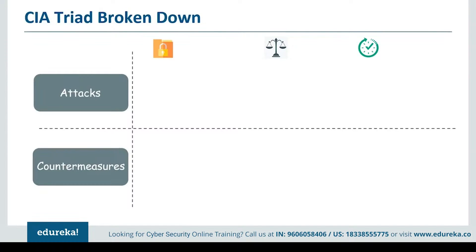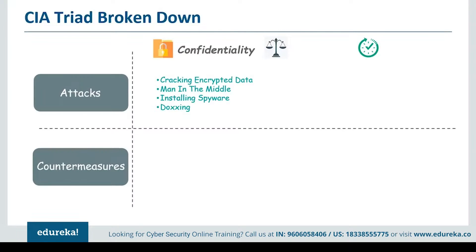Let's look at attacks on the CIA triad in the real world and how we can mitigate them. Confidentiality attacks include cracking poorly encrypted data, and employees knowingly or unknowingly putting sensitive data on removable media such as SD cards or pen drives and giving them to unauthorized parties. There is also doxing — leaking private information about an individual or organization to cause harm. The best way to keep information secret is to enforce strict access control and to encrypt any data being transmitted.